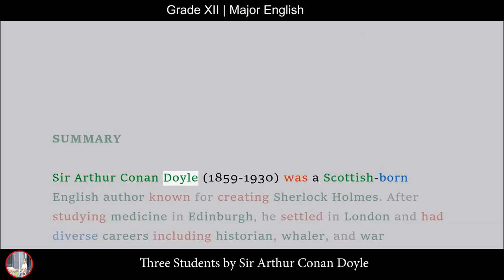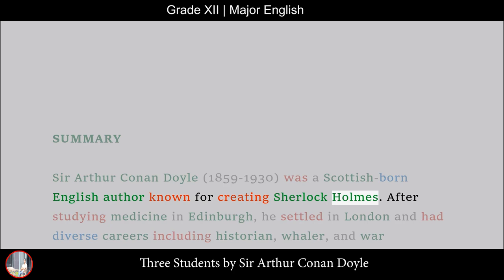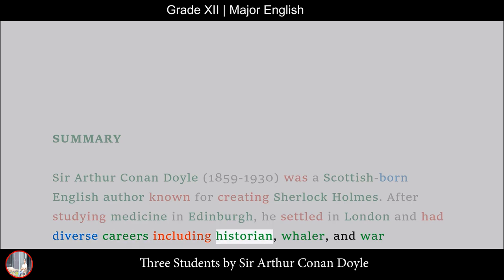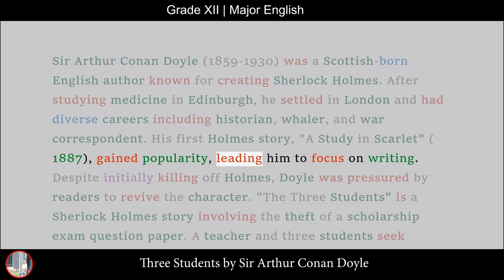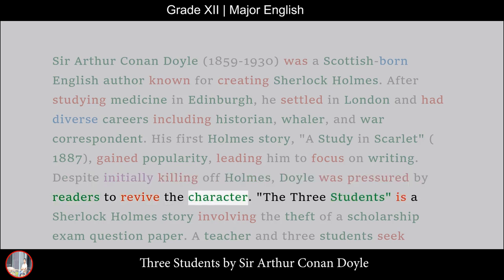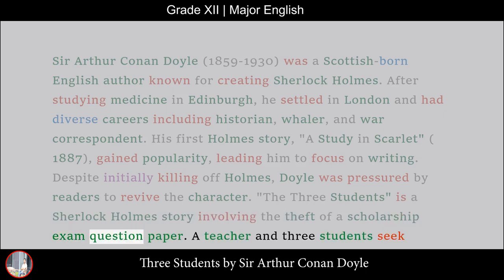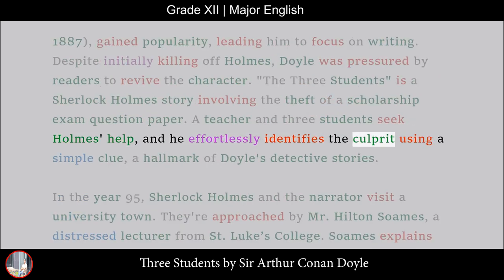Summary. Sir Arthur Conan Doyle, 1859–1930, was a Scottish-born English author known for creating Sherlock Holmes. After studying medicine in Edinburgh, he settled in London and had diverse careers including historian, whaler, and war correspondent. His first Holmes story, A Study in Scarlet (1887), gained popularity, leading him to focus on writing. Despite initially killing off Holmes, Doyle was pressured by readers to revive the character. The Three Students is a Sherlock Holmes story involving the theft of a scholarship exam question paper, where Holmes effortlessly identifies the culprit using a simple clue.